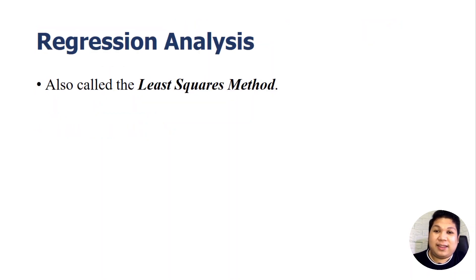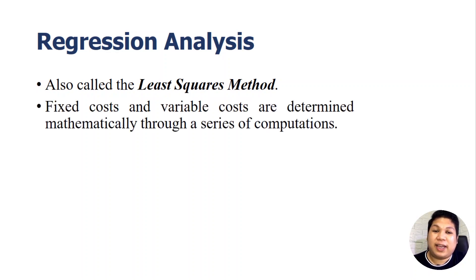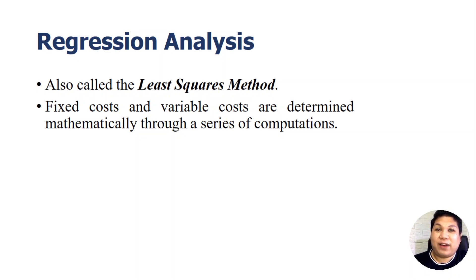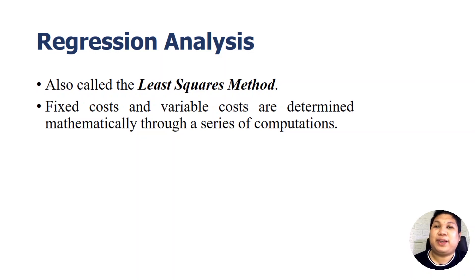Regression analysis is also called the least squares method. In this method, fixed costs and variable costs are determined mathematically through a series of computations. In our previous two methods — the scatter graph method and the high-low method — we only used two points. In the scatter graph, we drew a line between the points and identified the y-intercept when x is zero. In the high-low method, we used two points when computing the slope. Both methods only used two points when estimating costs.